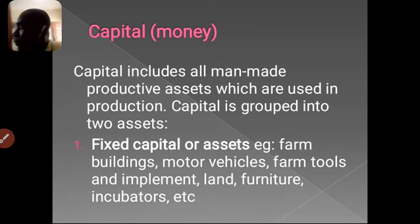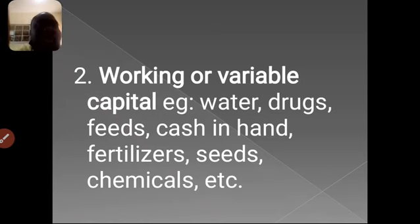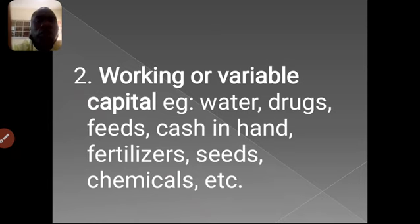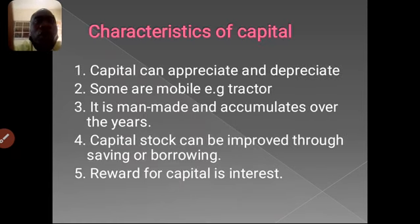The second type of capital is working or variable capital. These are capital that you use for a particular period or season — you use them and for the next season you require another one, or you finish using them within a certain period of production. They are referred to as working capital. For instance: water, drugs, feed, cash in hand, fertilizer, seed, and chemicals. All these are used within a season or a particular period of production.